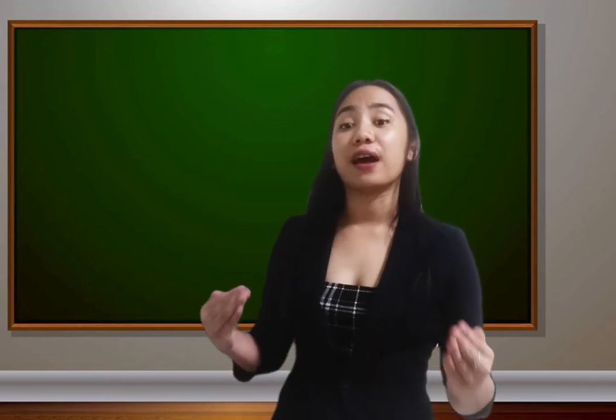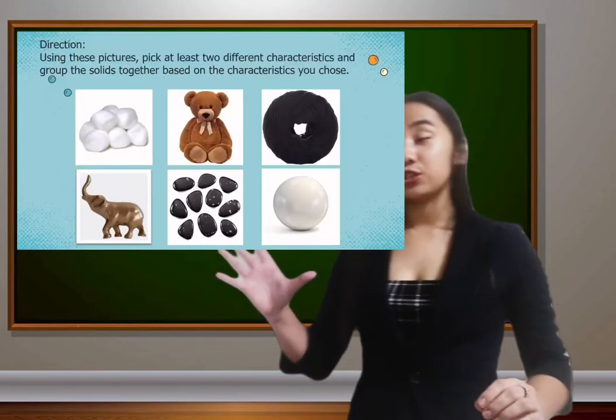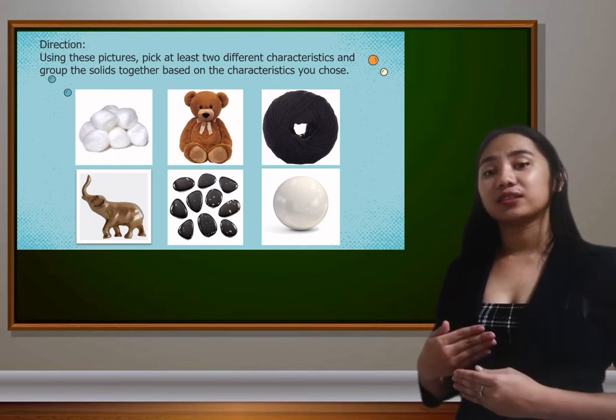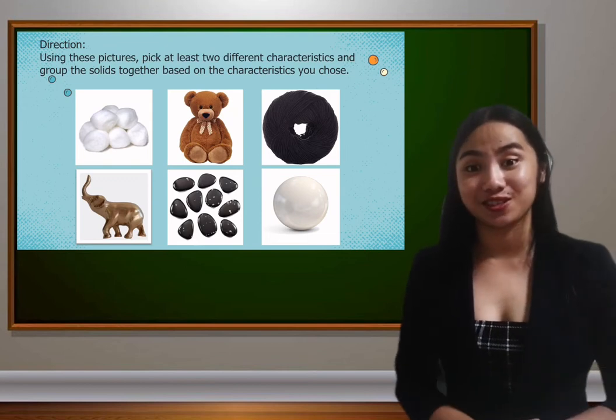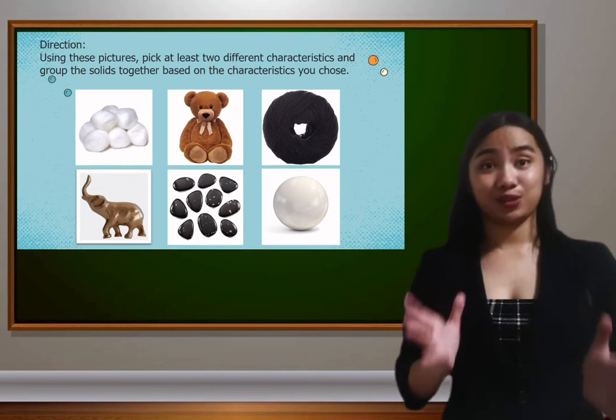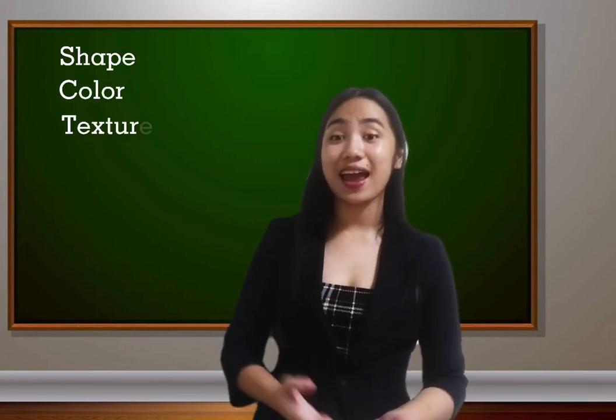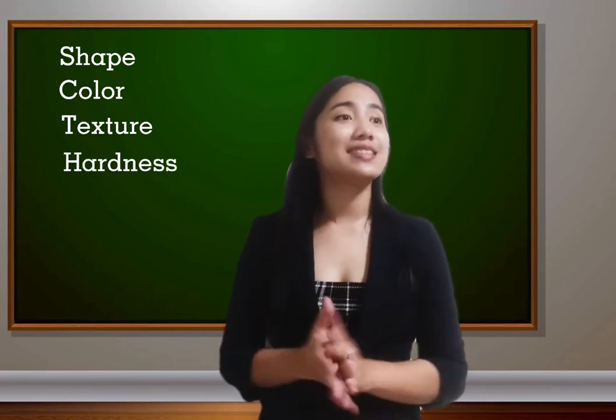So you see these objects are found all around us, and if we use different characteristics, we can get different groupings. So we will now have another activity. Using these pictures, I want you to choose at least two observable characteristics and list the objects according to the characteristics that you chose. Is that understood? You may now start. Are you all done? How was the activity? Was it easy? Was it hard? So how did you group those objects? Those objects can be grouped using the shape, the color, the texture, and the hardness. I believe that you all did a good job.